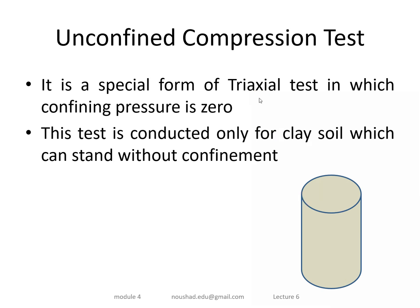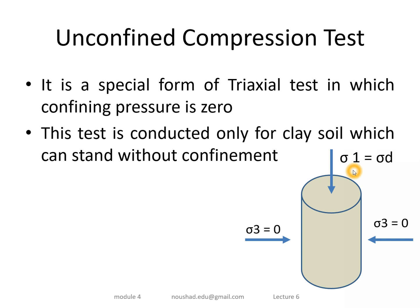In the triaxial test, the cylindrical specimen is placed under a cell pressure. The principal stress relationship is: sigma 1 equals sigma 3 plus the deviator stress sigma d. In the UCC test, sigma 3 equals zero, so sigma 1 equals the deviator stress, which is also the axial stress and major principal stress.